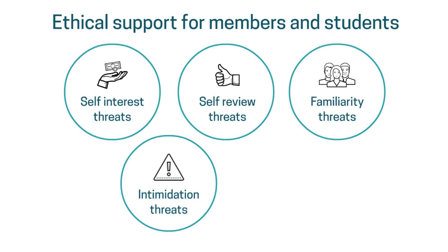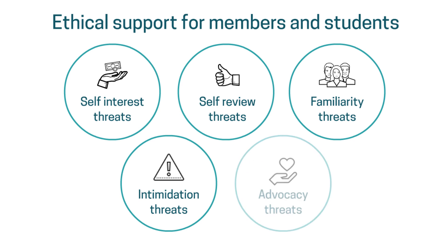Another issue might arise when an accountant feels extremely strongly about a specific cause or has a very strong opinion on a certain matter — for example, animal rights or equal pay. This would present an advocacy threat. Say that you're a member of an animal rights group like PETA, and in your role you're responsible for compiling the accounts for a company which is known to conduct testing on animals. Your advocacy of animal rights may affect your ability to be impartial, and as a result you may be overly critical and skeptical when doing the accounts for this particular company.